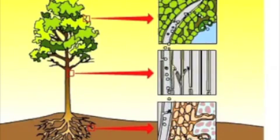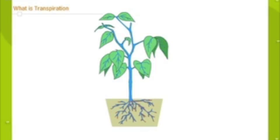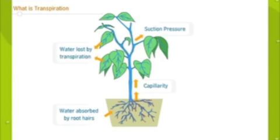Transpiration is like evaporation. Leaves have openings called stomata. The stomata have guard cells that open and close the pore. The stomata allow the circulation of carbon dioxide from the air for photosynthesis. Transpiration cools plants and lets large amounts of nutrients and water move from the roots to the shoots.